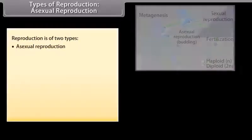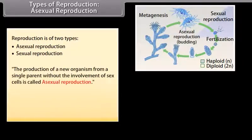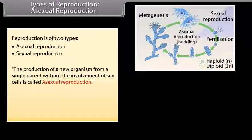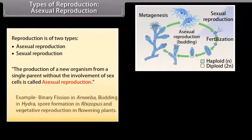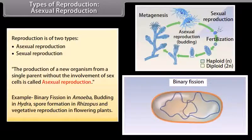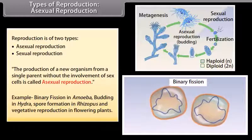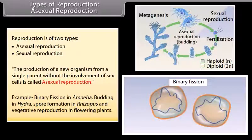Reproduction is of two types: asexual reproduction and sexual reproduction. The production of a new organism from a single parent without the involvement of sex cells is called asexual reproduction. For example, binary fission in amoeba, budding in hydra, spore formation in Rhizopus, and vegetative reproduction in flowering plants.